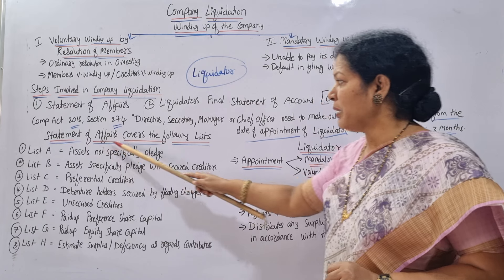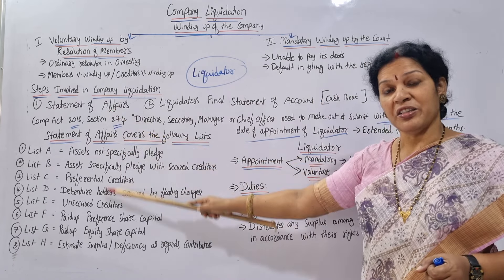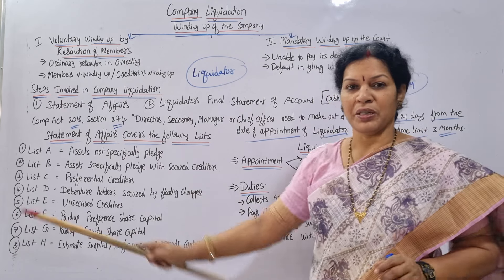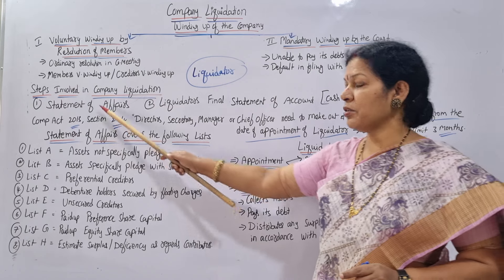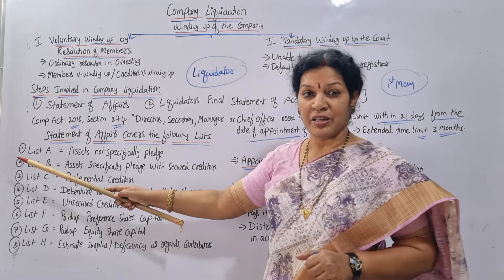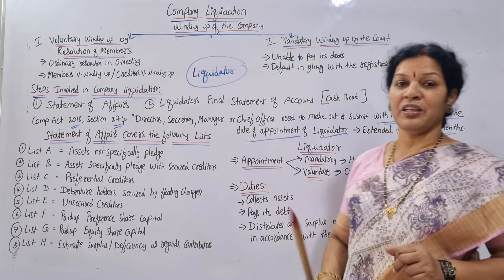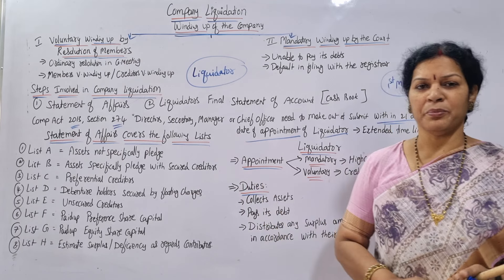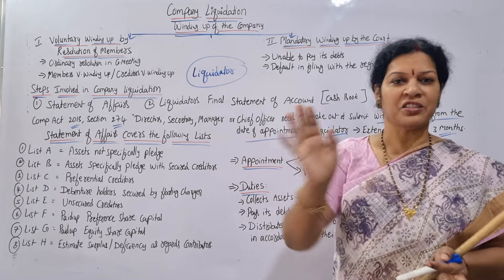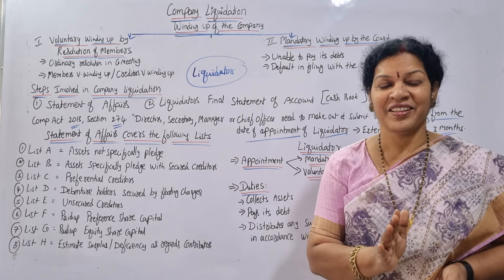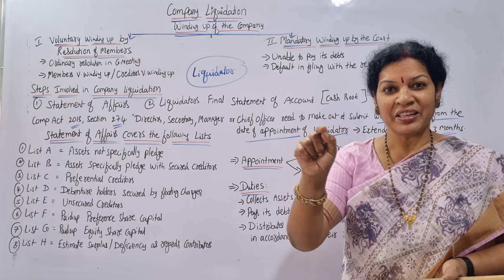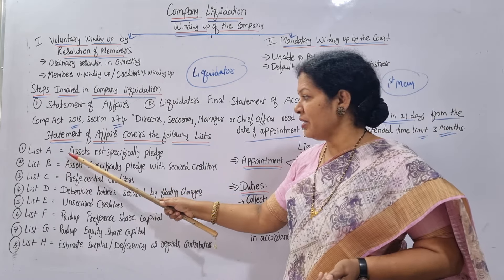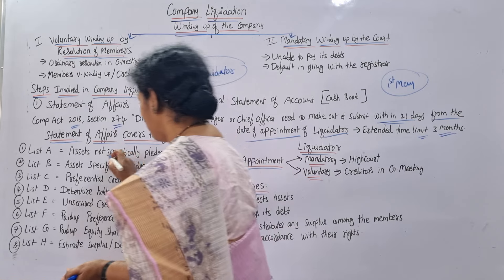Now, the Statement of Affairs covers the following list. There are a total of eight points — lists A through H. List A covers assets not specifically pledged. These are free assets with no pledge — for example, plant and machinery worth one lakh that is not pledged. Since it is free, you can sell it. A pledged asset belongs to a specific creditor who has rights over it. Assets not specifically pledged means they are free — no doubt at all.